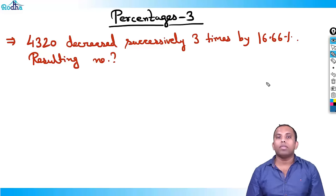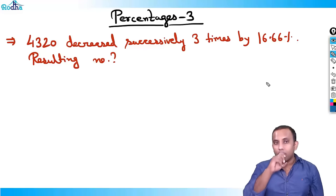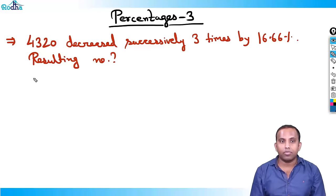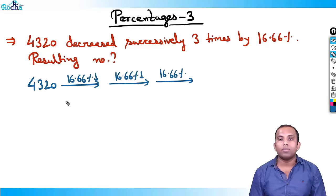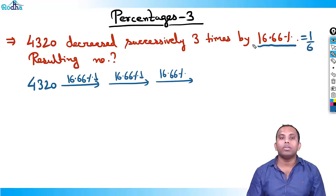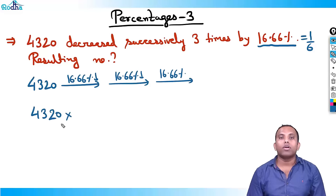We're doing lots of examples to make you understand this concept and make your calculations fast. 4320, decreased by 16.66%, again decreased by 16.66%, and again decreased by 16.66%. I know its fraction value is 1/6. So we can directly do it using the multiplying factor concept — don't need to assume any number because 4320 is already given.